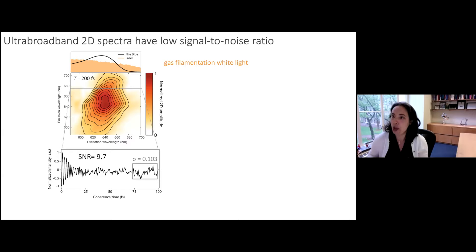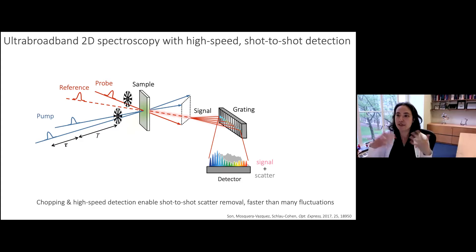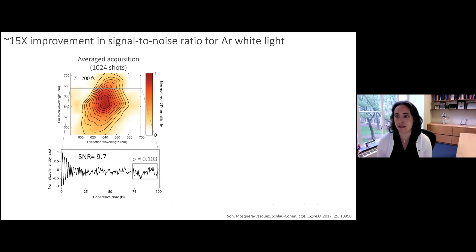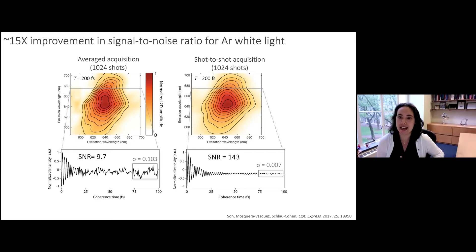So we integrated a high-speed detector and choppers into our setup. There have been various approaches to shot-to-shot or single-shot spectral acquisition — we did it this way because it's simple. With choppers and a high-speed camera, we perform background subtraction on a shot-to-shot basis, removing the scattering component faster than many fluctuations occur. This simple addition gave us about a 15-fold improvement in signal-to-noise ratio — a significant improvement in data quality.